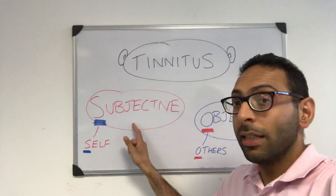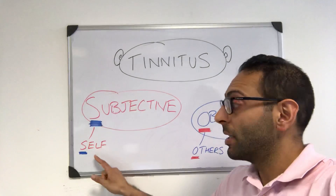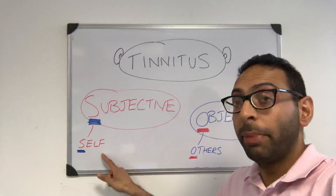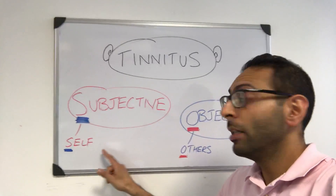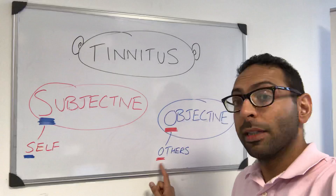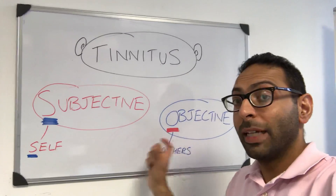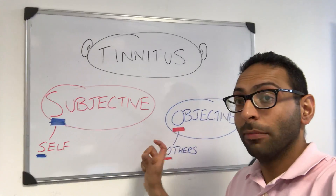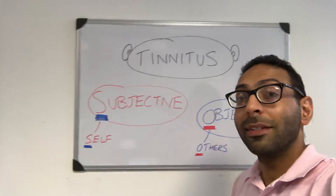Subjective tinnitus — 'S' goes with 'self', so only the patient can hear it. Objective tinnitus — 'O' goes with 'others', meaning other people can hear it as well.